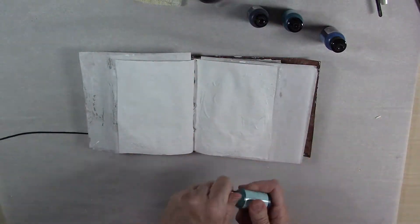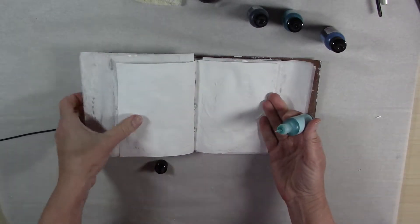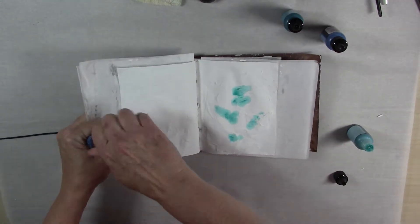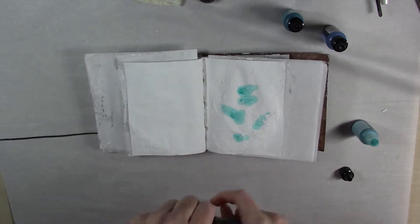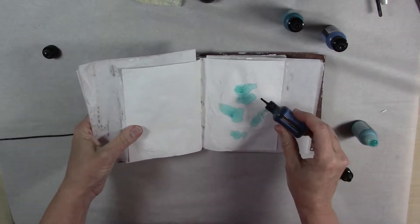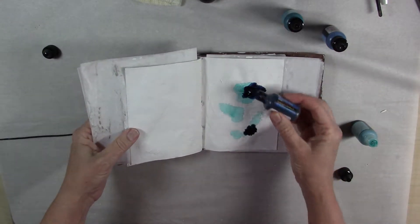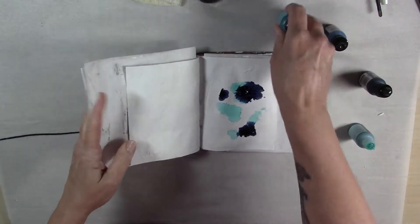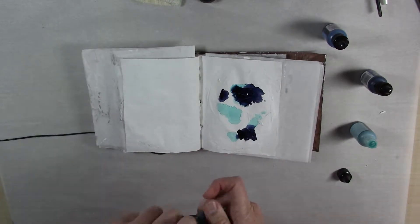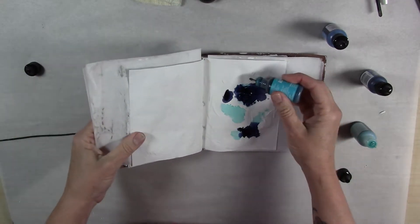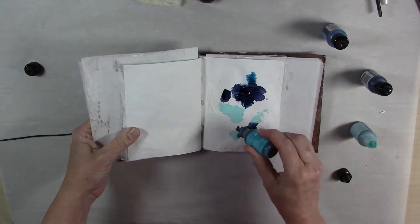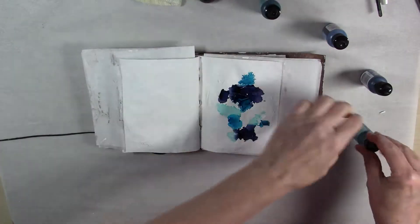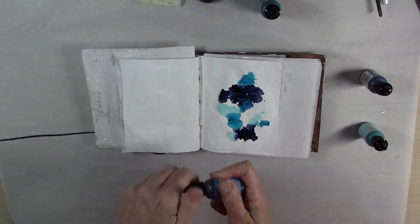So for the next step, all I did was take my alcohol ink and just randomly applied some drops to my page. When I started doing the subsequent colors, especially if they were dark, I was being a little more deliberate where I put the drops of the alcohol ink on the paper.